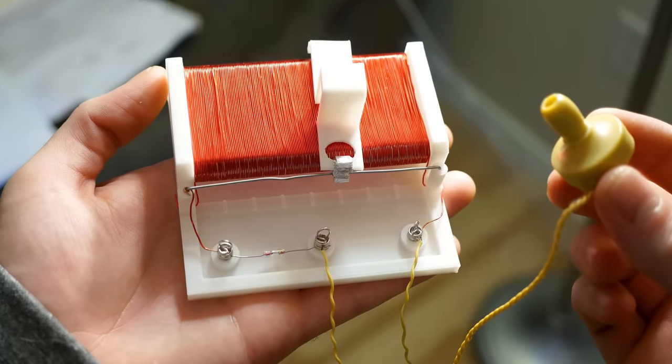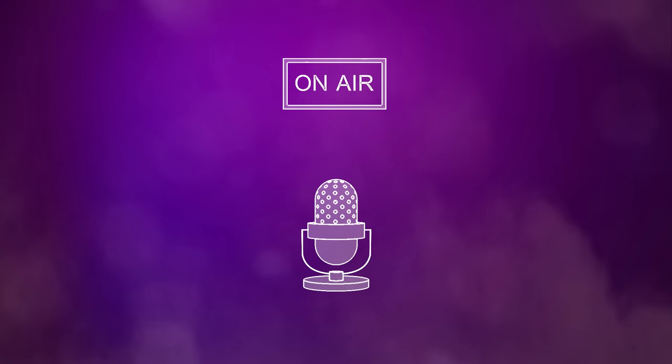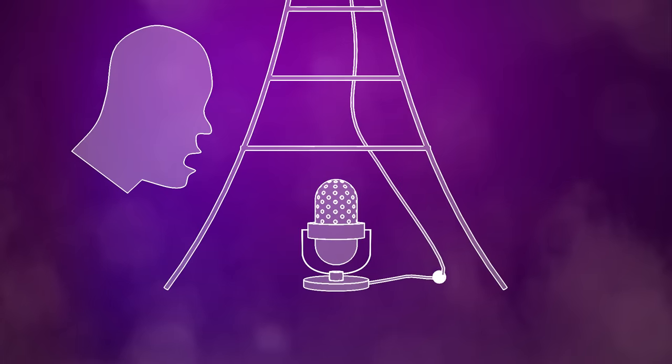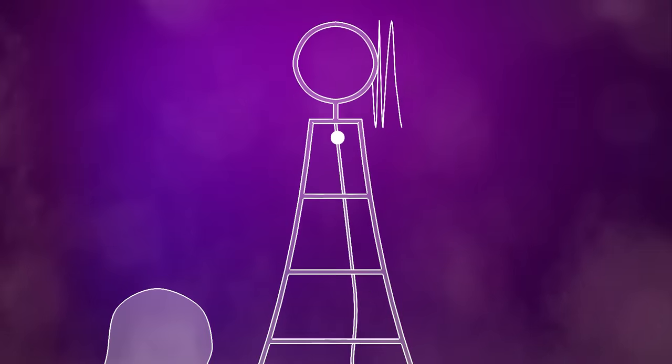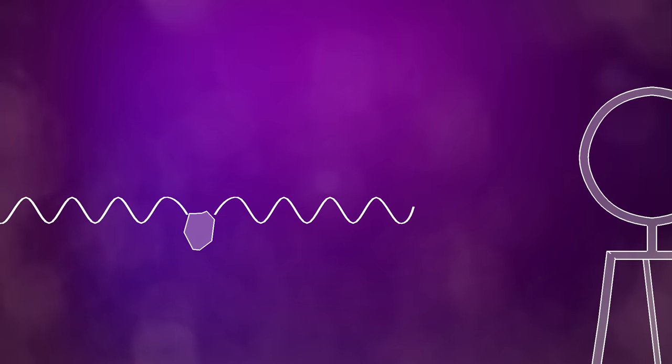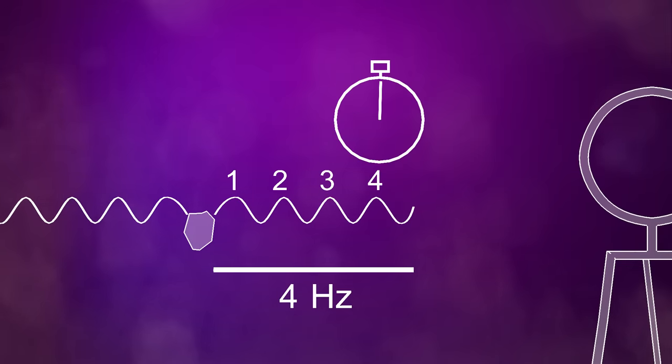But first let's learn about AM radio. Each radio station will convert sound waves into electromagnetic waves. You can think of these waves like the ones you see when a rock falls into water. The number of times a wave goes up and down in a second is called its frequency, measured in hertz.